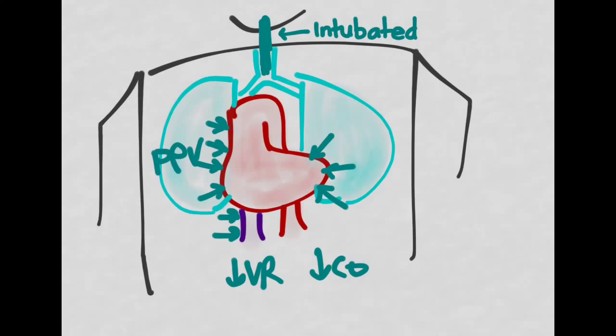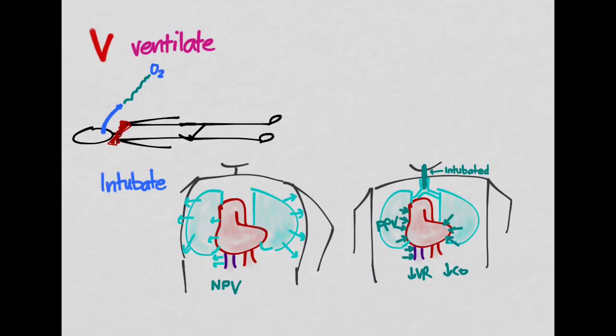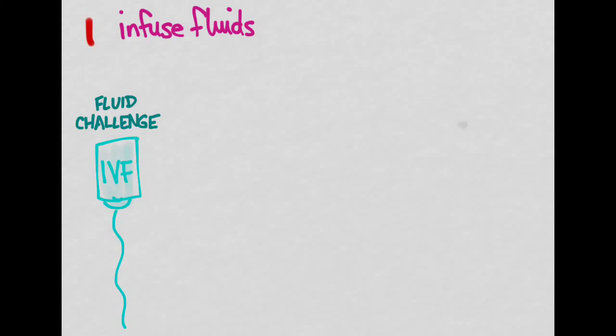That was our discussion of V for VIP, ventilate. Now let's look at I. I stands for infuse fluids. What that really means is you want to give a fluid challenge. You're going to give them some fluid and see what happens, challenge them with it and see how they respond. The paper goes into four different aspects we need to know about for a fluid challenge.